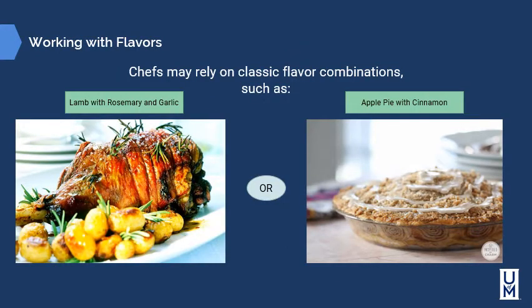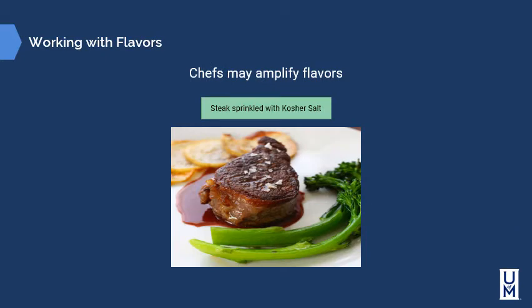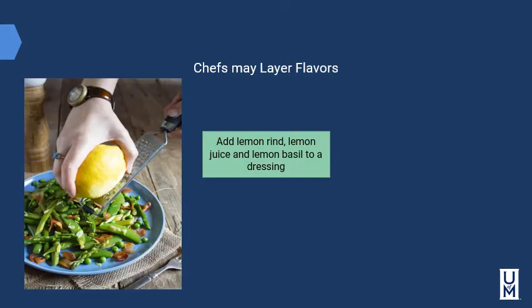When working with flavors, chefs may rely on classic flavor combinations such as lamb with rosemary and garlic, or apple pie with cinnamon. These combinations have been around a long time because they work. Chefs can also amplify flavors — for example, sprinkling kosher salt on a steak enhances the Maillard reaction and natural juices without altering them. Chefs may also layer flavors, such as adding lemon rind, lemon juice, and lemon basil to a dressing at different times in the process, creating different flavor sensations that come and go at different moments.